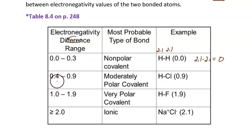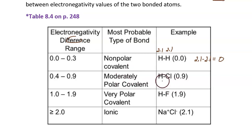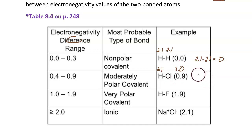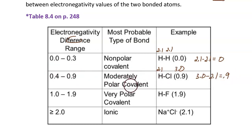The next range of the table goes from 0.4 to 0.9 — that's a moderately polar covalent bond. One end of the bond is slightly negative; the other end is slightly positive. An example is HCl, hydrogen chloride. The electronegativity number for hydrogen is 2.1, and for chlorine on page 181 it's 3.0. The difference is 3.0 − 2.1 = 0.9, which fits within this range. Therefore, this bond is moderately polar covalent.